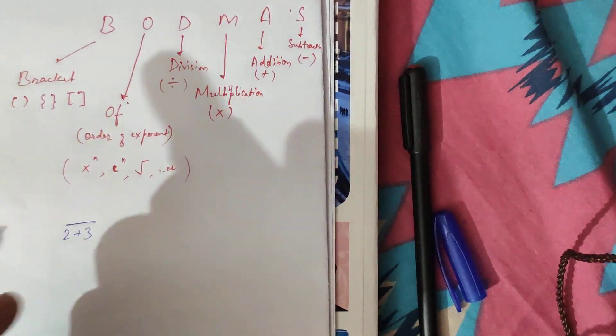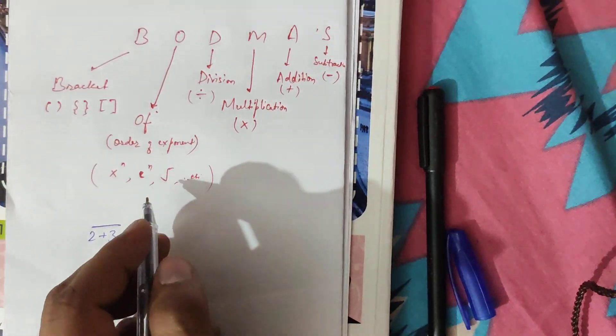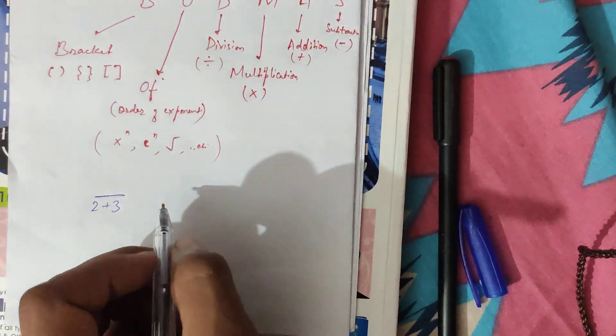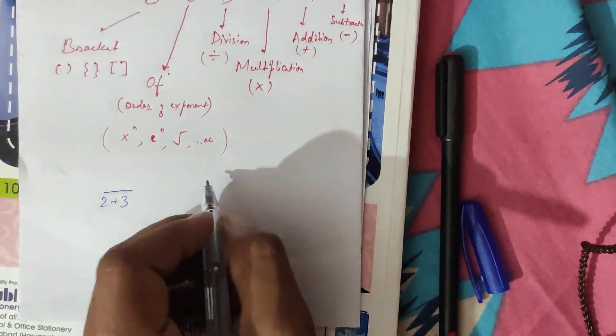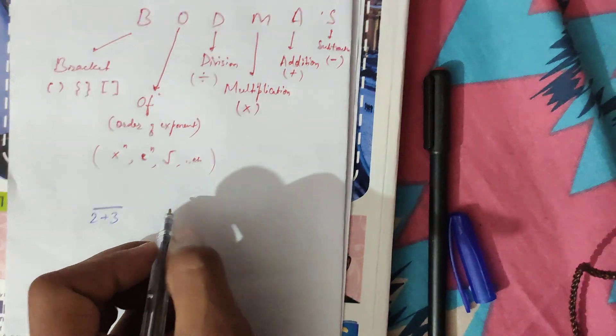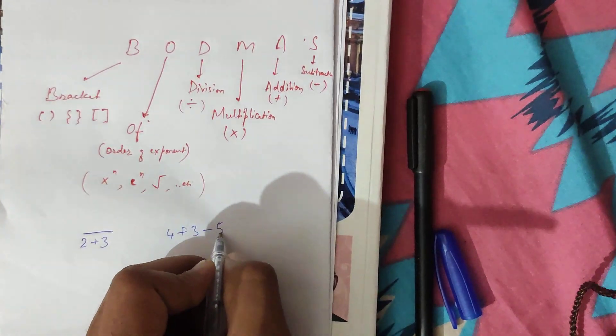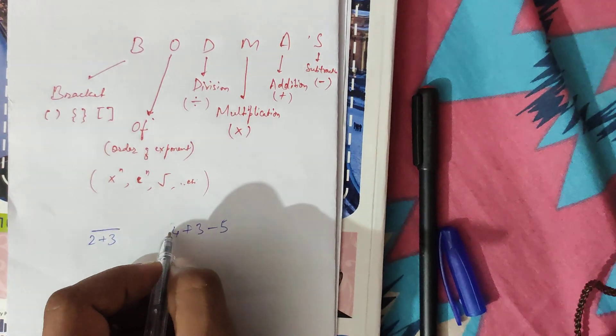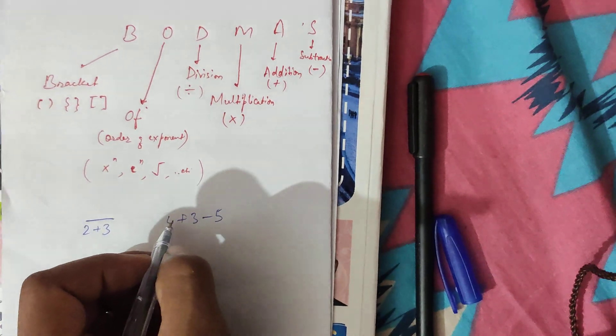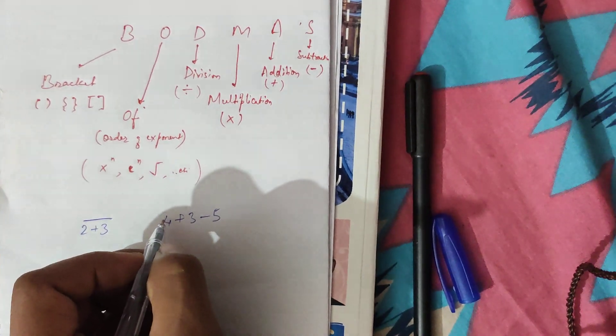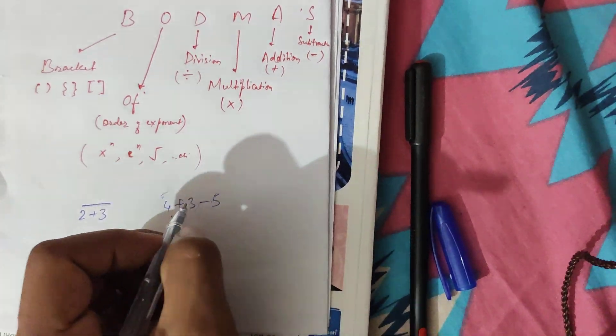Also, if we have the operator on the most extreme side of the left, we treat it as a plus sign. Here we are given 4 plus 3 minus 5, then this also has a plus sign and we will treat it as addition. So first we solve 4 plus 3 equals 7, and then minus 5.